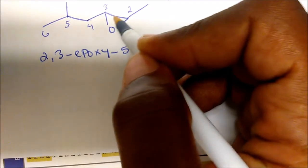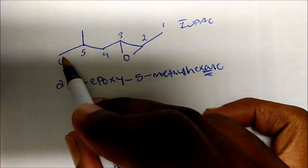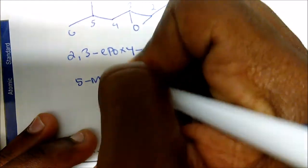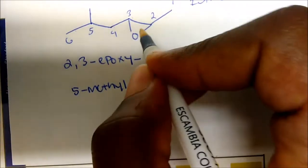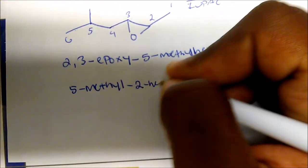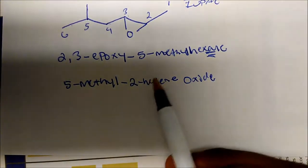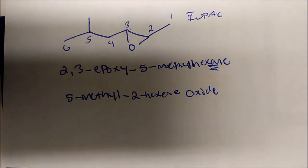We're going to treat this as if it were an alkene. One, two, three, four, five, six — so this is a hexene. We locate our substituent: 5-methyl. Our pretended alkene bond is on carbon two, so this would be 5-methyl-2-hexene oxide — attaching 'oxide' to symbolize that the oxide is where the double bond would be.